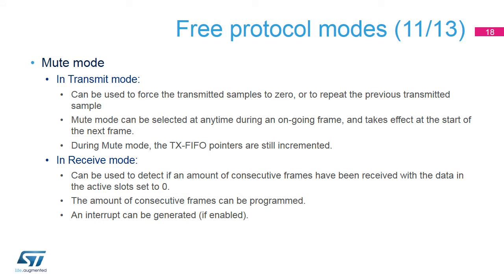The SAI also provides a mute function. In transmit mode, the user can choose to send zeros on muted slots or the previous transmitted value. The previous transmitted value is limited to configurations having one or two slots per frame. Note that in transmit mode, the TX-FIFO pointer is still incremented, meaning that the data which was present in the FIFO and for which the mute mode is requested is discarded.